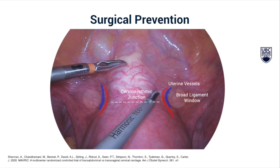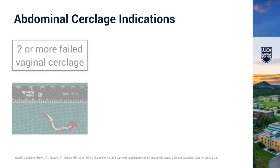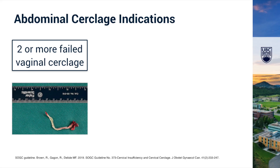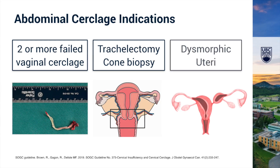There is strong literature support for the efficacy of abdominal cerclage in reduction of preterm birth and increased gestational age at delivery. Abdominal cerclage is indicated in cases of failed vaginal cerclage. It is also recommended following surgical shortening procedures such as trachelectomy or cone biopsy, and in the presence of uterine anomalies causing extreme cervical shortening.